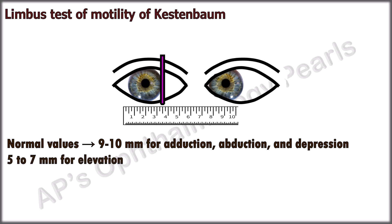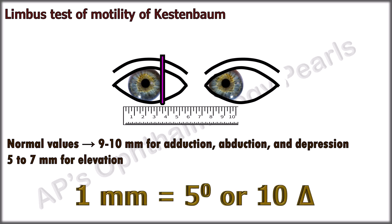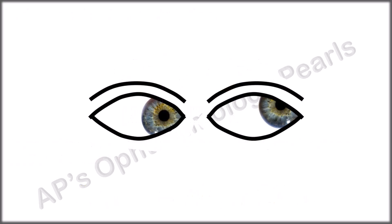If one wishes to express the movement in terms of degrees or prism diopters, conversion can be done using the equivalency of 1 millimeter to 5 degrees or 10 prism diopters.